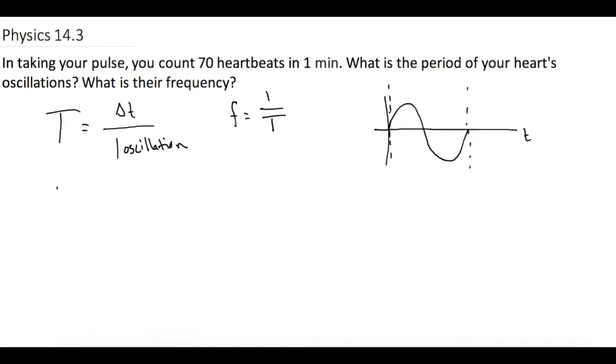So in other words we're saying if we have some set period of time or some change in time, how many oscillations happened in there? So obviously you can see the inverse relation here. Period is how much time did it take to do one wave or one oscillation. And frequency is how many oscillations or waves happened in some time period.